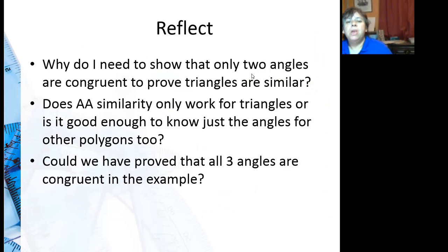So in reflection, why do I need to show that only two angles are congruent to prove the triangles are similar? And does angle-angle similarity only work for triangles? Or is it good enough to know just the angles for other polygons too? What about quadrilaterals? Are all squares similar? Are all rectangles similar? Could we have proved that all three angles are congruent in the example?